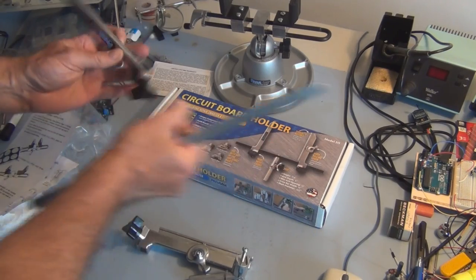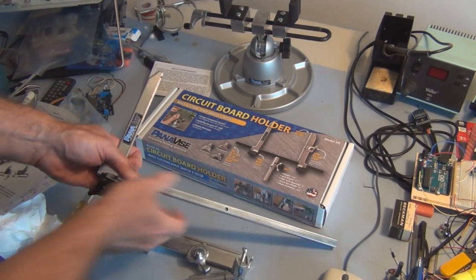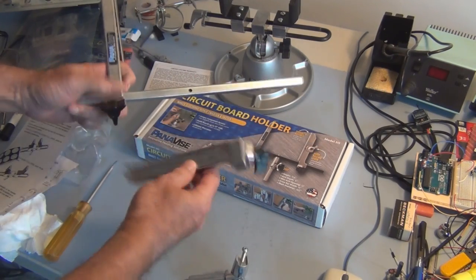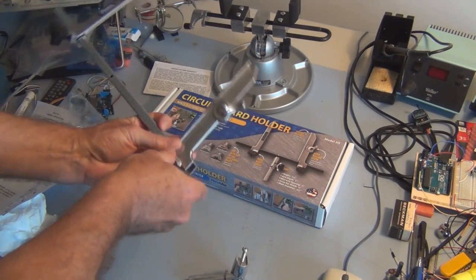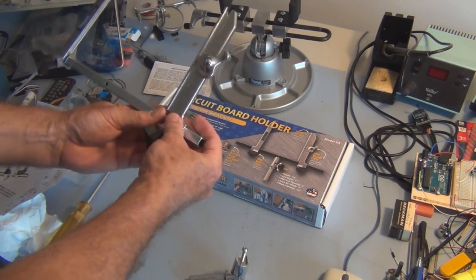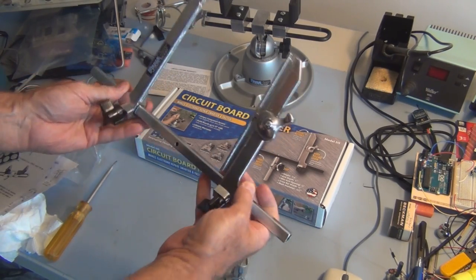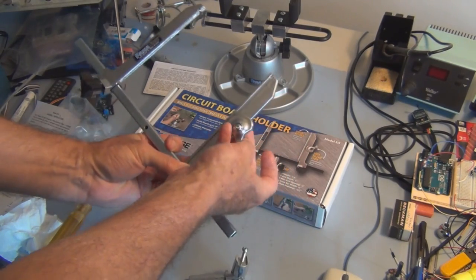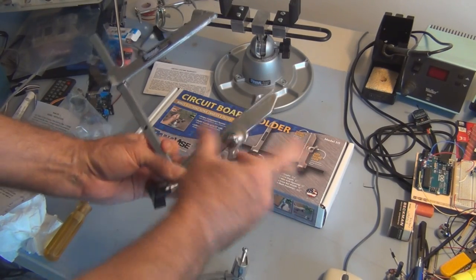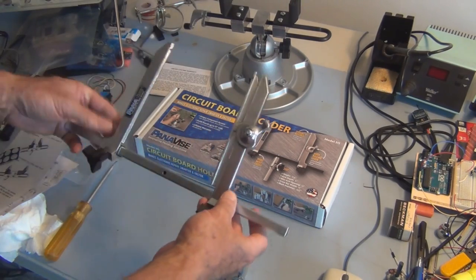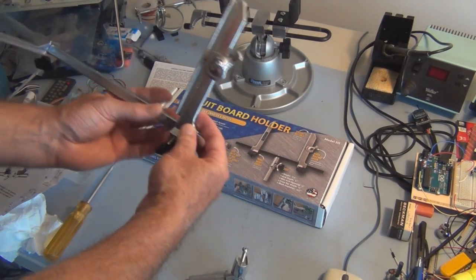So these just slide onto this bar. Once you have the circuit board in there, you have this adjusted for the size. There's a quick release mechanism here. It gives you that little extra to put pressure on the board, or just quick release and release the board. Actually, I have that on wrong. It goes on like this.